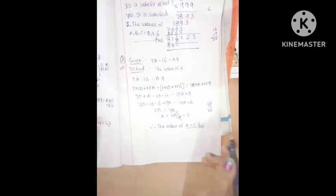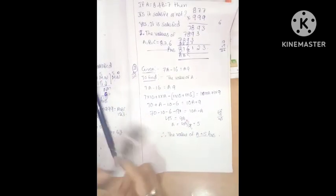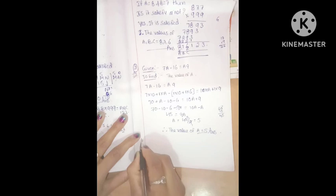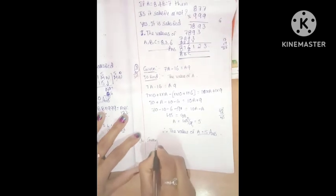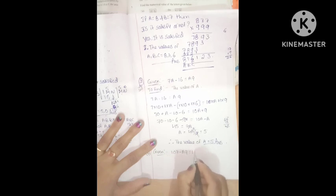Are you clear, Gagansan? Yes, this is the second method, second one. This is a very short method, another method. Next, B: given, one subtraction is 107 minus A9 equal to 1A.